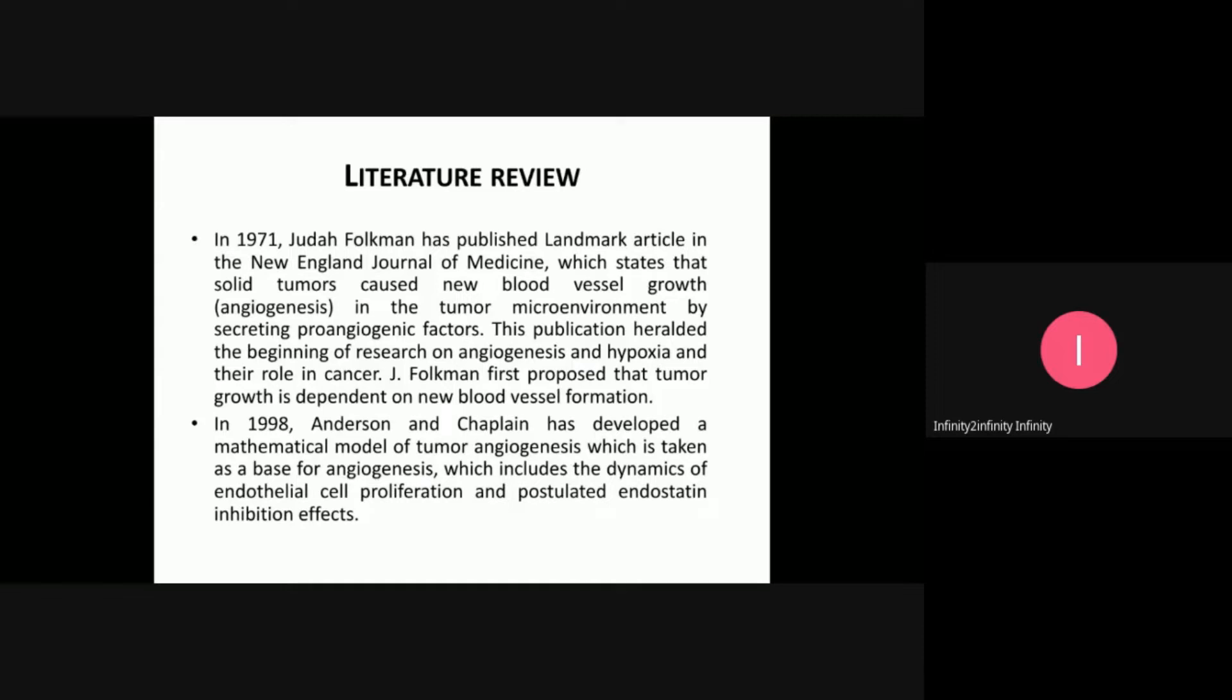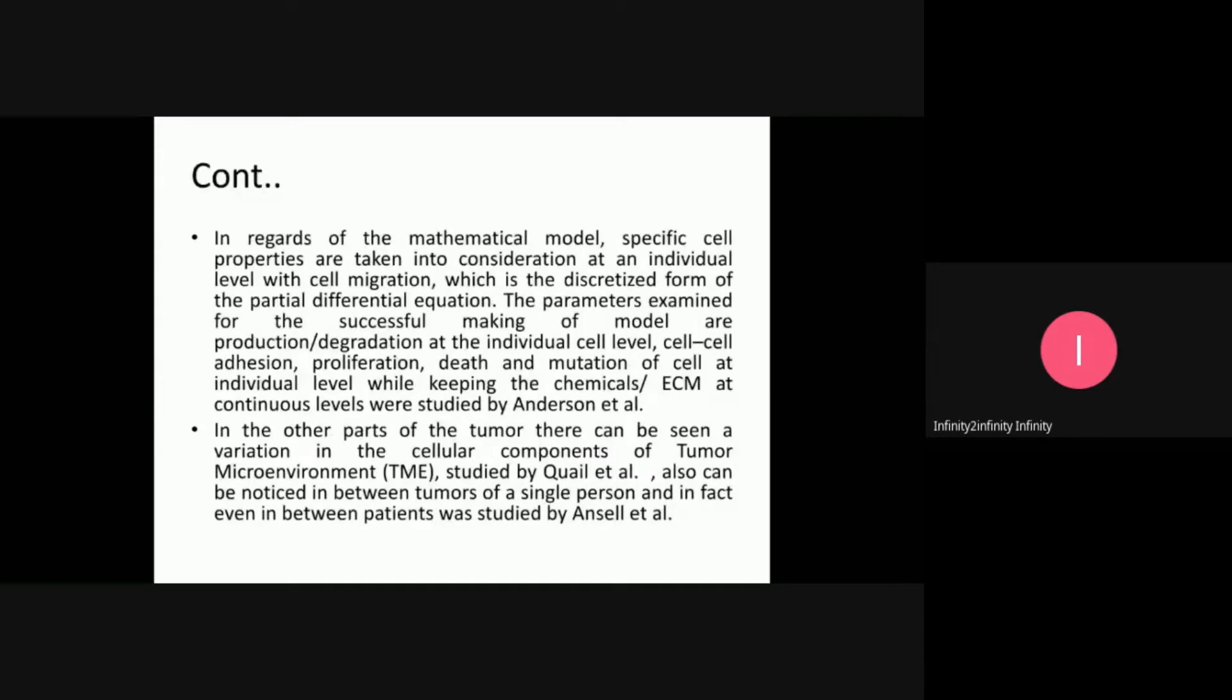This well-known paper by Folkman was followed in 1998 by Anderson and Chaplan, who developed a mathematical model of tumor angiogenesis. Their discrete mathematical model considers specific cell properties at the individual level with cell migration, using a discretized form of partial differential equations. Parameters examined include production, degradation at individual cell level, cell addition, proliferation, death, and mutation while keeping chemicals and ECM at continuous levels. The new mathematical model in this study includes logistic growth of the tumor.